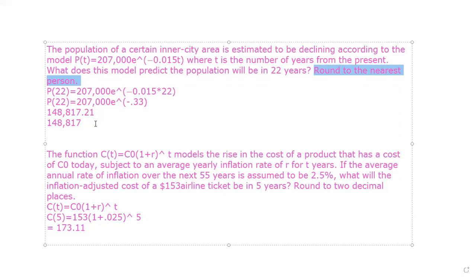And so be really careful and pay attention because if you were around, if you're talking about money, then you would have some number after the decimal place. But since you're talking about just a plain population, you need to round that to the nearest whole number. And so we have 148,817.